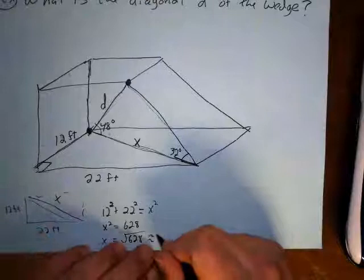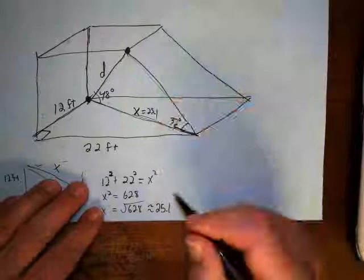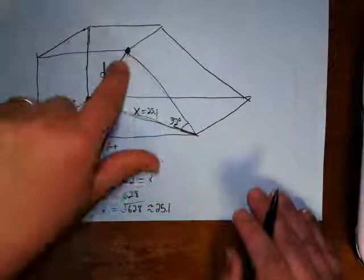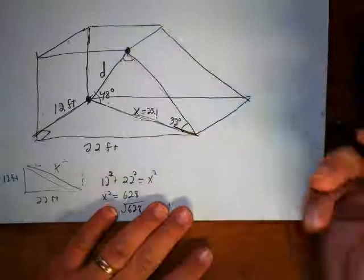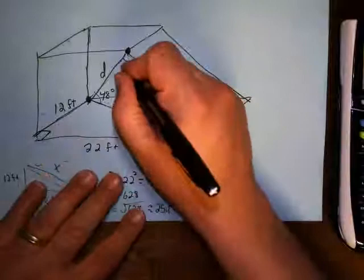So we could say like 25.1 if I round to the nearest tens place. So this is like 25.1 and now I have this triangle and I got two sides and an angle side angle. And now I can use the law of sines to find this. And so basically I'm going to need to know this angle. So I'm going to do 180 minus 48 minus 32. And it looks like this is 100 degrees here.